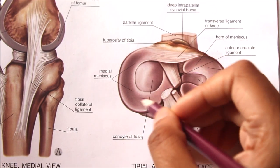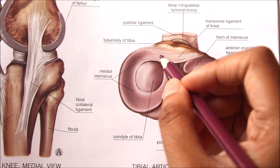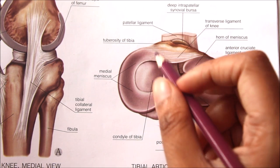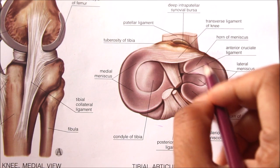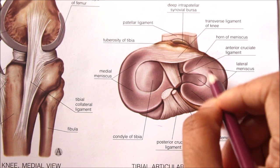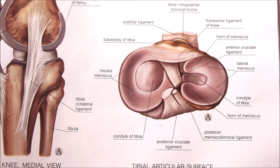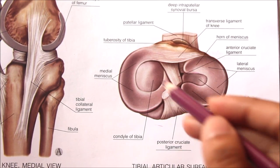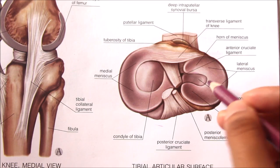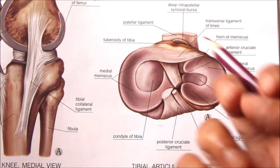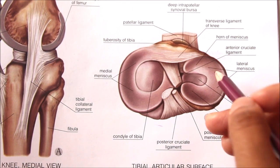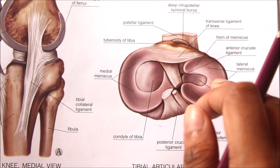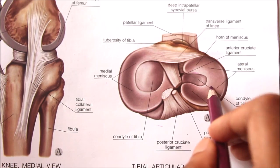The medial meniscus is nearly semicircular, being wider behind than in front. The lateral meniscus is nearly circular. The functions of the menisci include helping to make the articular surfaces more congruent, serving as shock absorbers, helping to lubricate the joint cavity, and because of their nerve supply, they also have a sensory function.